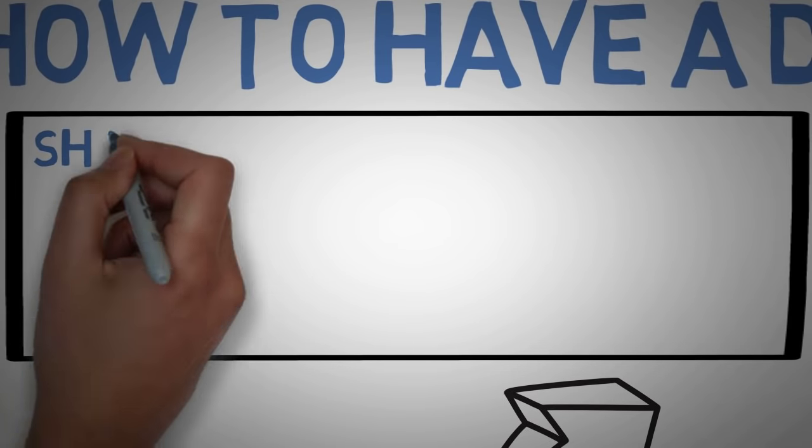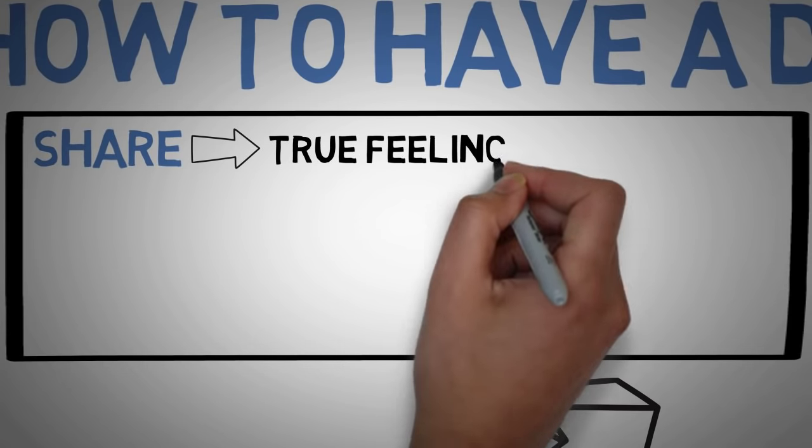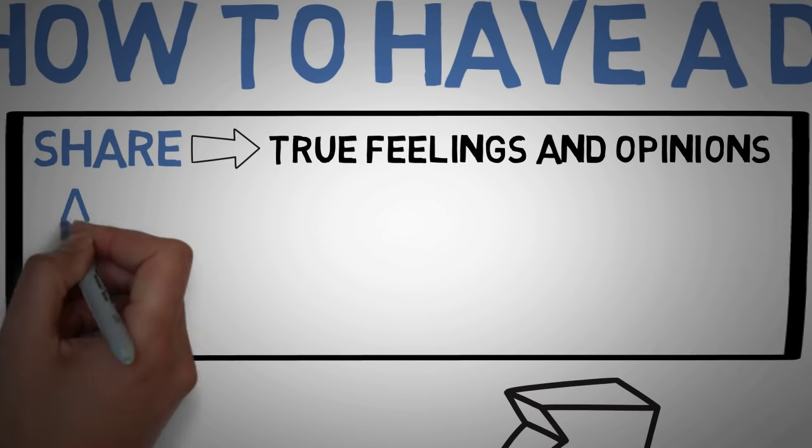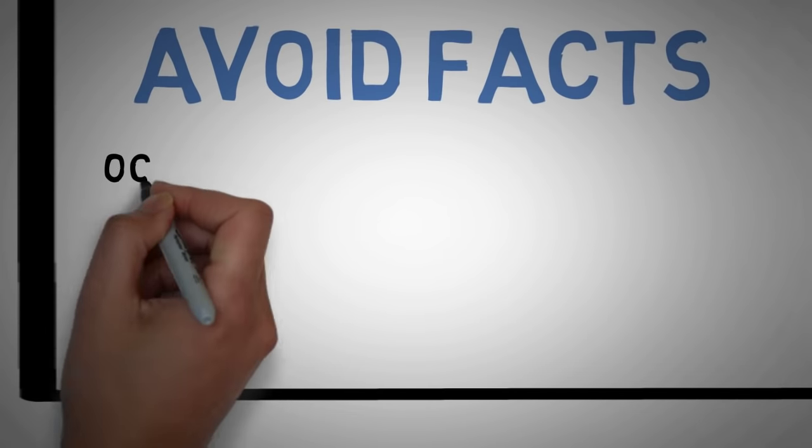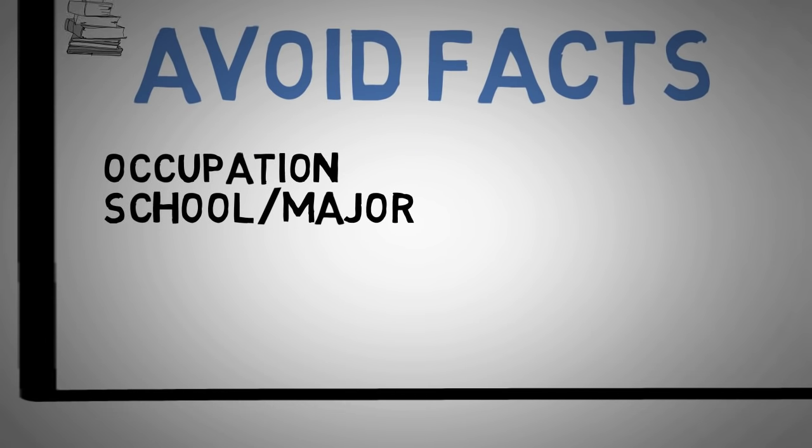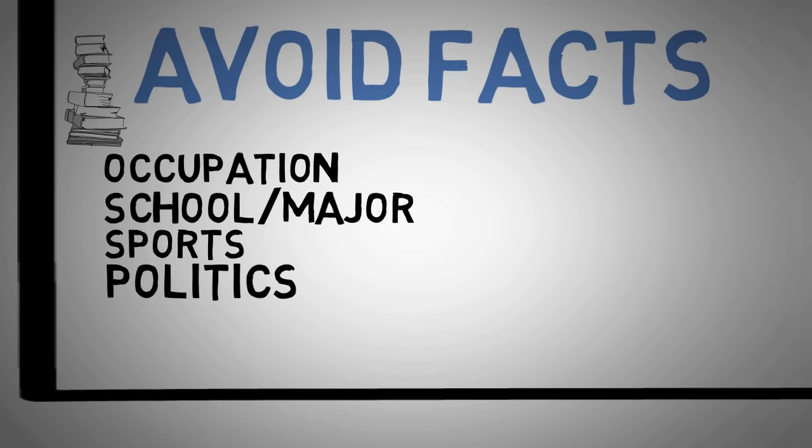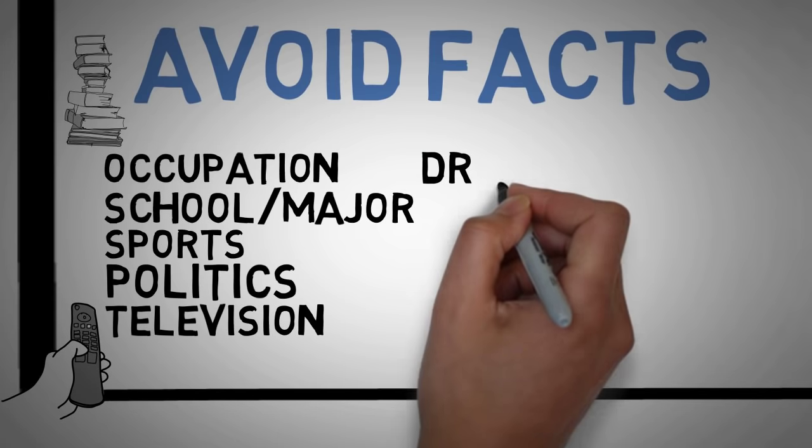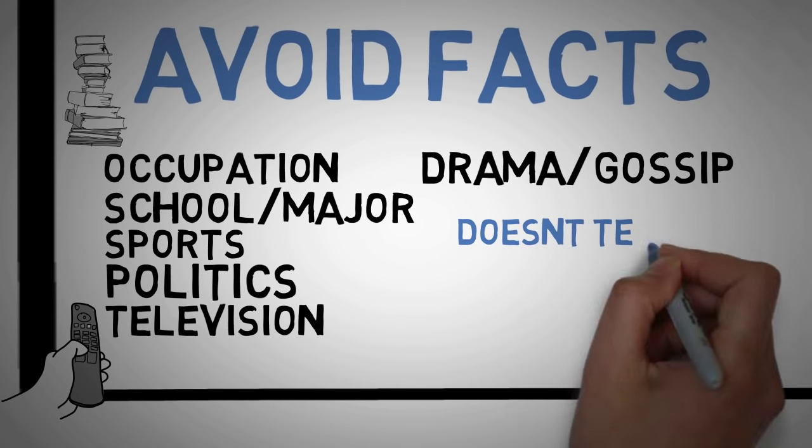In order to properly share, you need to reach deep down into yourself and express your true feelings and opinions about things. The key here is to avoid facts and to seek emotion. Facts like your occupation, what school you went to, what major, the events of last night's sports game, the events of some random TV show, gossip and drama—this is all surface-level conversation. It's fine for making acquaintances but not for building a deeper relationship.